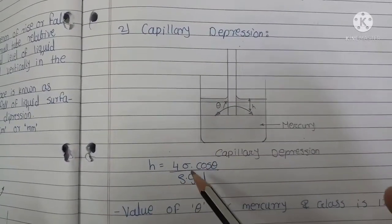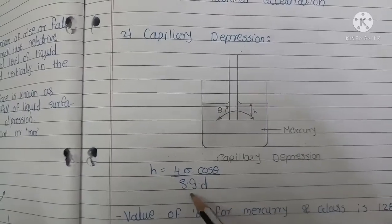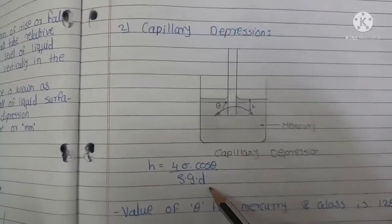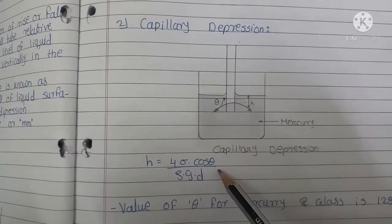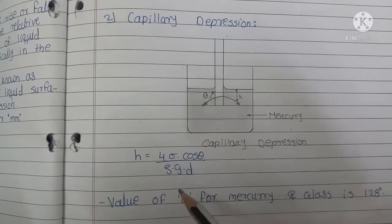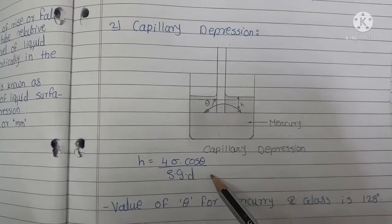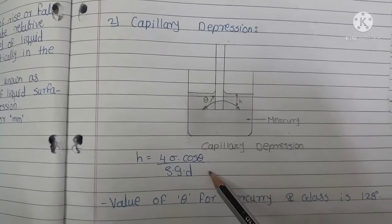The formula is h equals 4 sigma cos theta divided by rho times g times d. But for mercury, the contact angle theta is 128 degrees. This is an important difference from water.